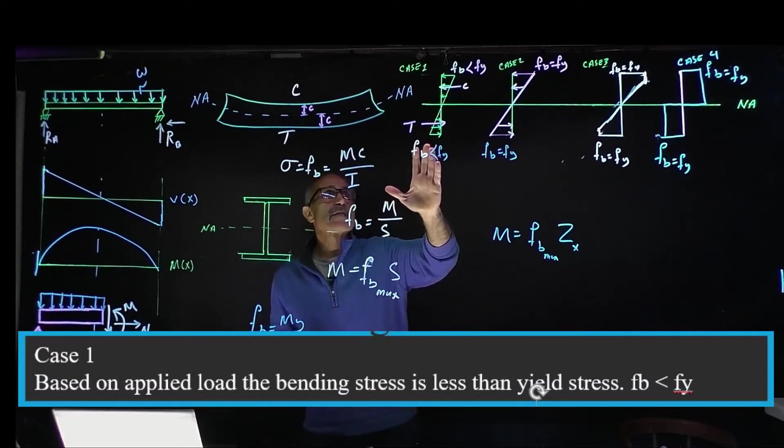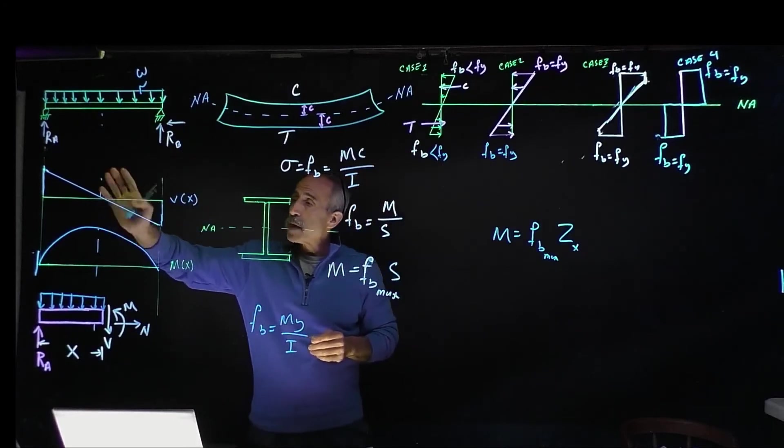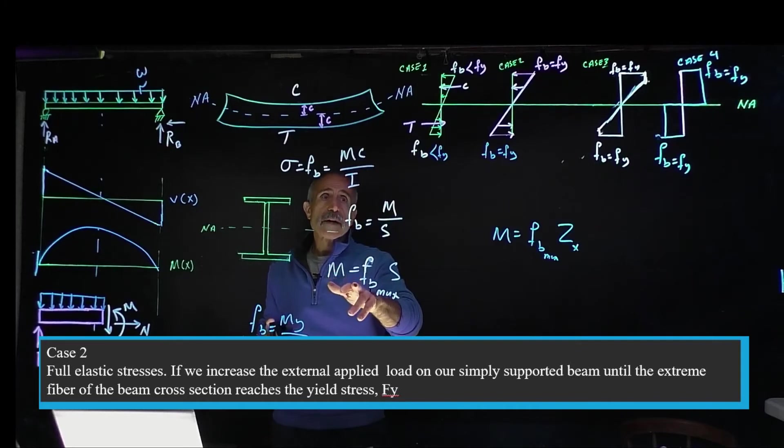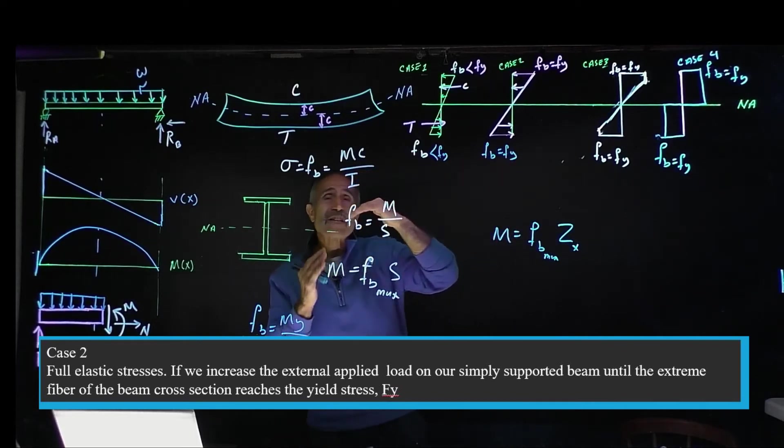In this case, we're just below the yield point; we remain in the elastic section. What happens if I increase the load? I'm going to increase the load. My moment is going to increase, which is basically equal to the bending stress multiplied by the section modulus.